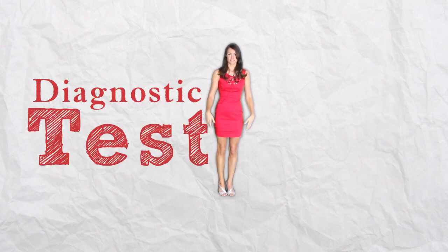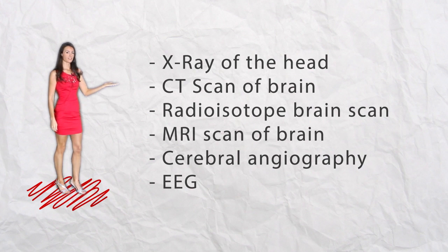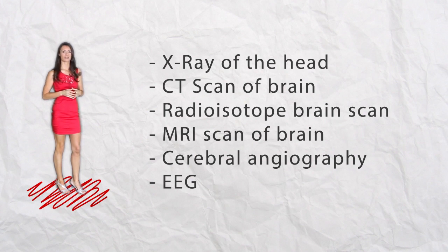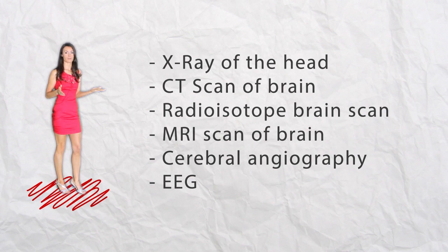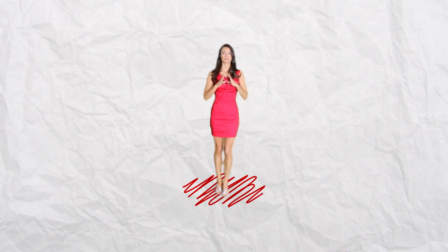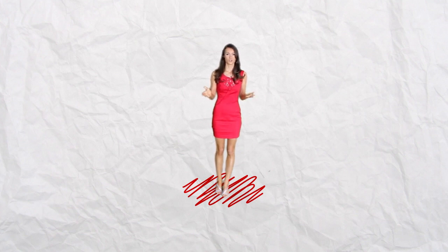Diagnostic tests can include an x-ray of the head if head injury is suspected, a CT scan of the brain if brain tumor, hemorrhage, or abscess is suspected, a radioisotopic brain scan to localize specific brain tumors or hematomas, an MRI scan of the brain if clearer visuals of the brain are necessary, and cerebral angiography to rule out arteriovenous malformations and to define the site or blood supply to a brain mass. One important thing to note is that a lumbar puncture should never be performed if there is suspicion of increased intracranial pressure, because it causes rapid decompression which may cause herniation of the brain stem, which could be fatal.